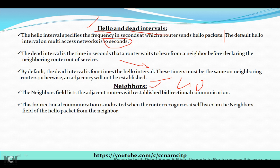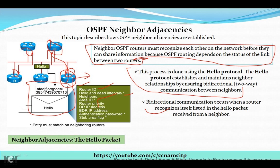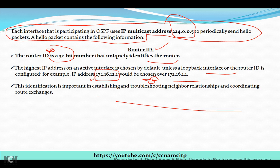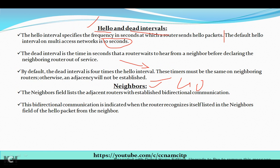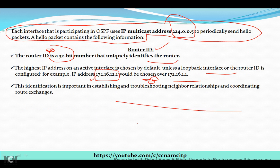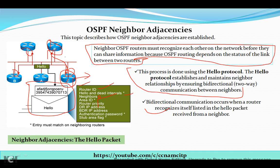The next component of the hello packet is the neighbors field. The neighbors field lists adjacent routers with established bi-directional communication. It keeps information about all neighbor routers through two-way communication. This bi-directional communication is indicated when the router recognizes itself listed in the neighbor field of the hello packet received from a neighbor.